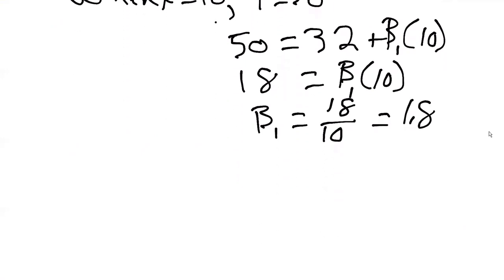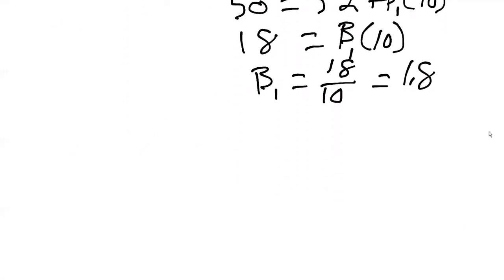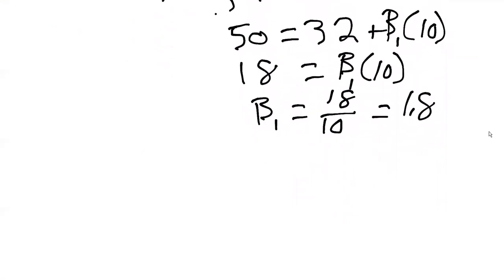Now we're getting somewhere. We've got the two numbers that can help to describe our line. Degrees Fahrenheit is going to equal 32, our value for beta 0, plus 1.8, our value for beta 1, times degrees Celsius. This is how we convert from degrees Celsius to degrees Fahrenheit.